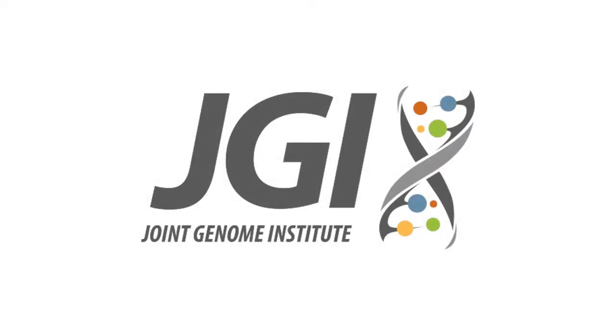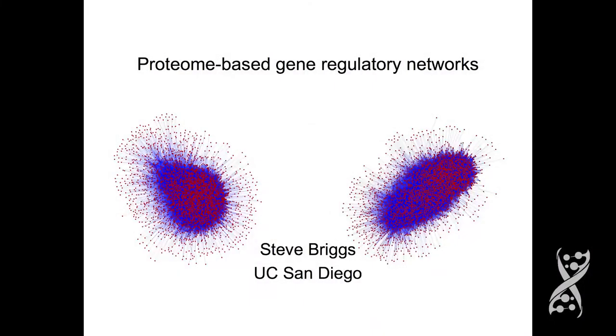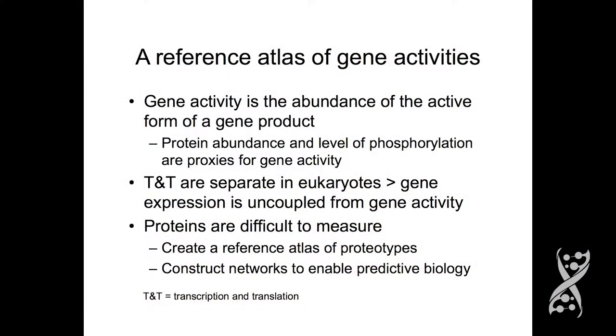I'm going to talk about a reference atlas of gene activities and how we're using it. I'm distinguishing gene activity, or defining it, as the abundance of the active form of a gene product. So if the gene product was an enzyme, it'd be the abundance and the specific activity of that gene product. We're using protein abundance measured directly and level of phosphorylation measured directly as proxies for gene activity.